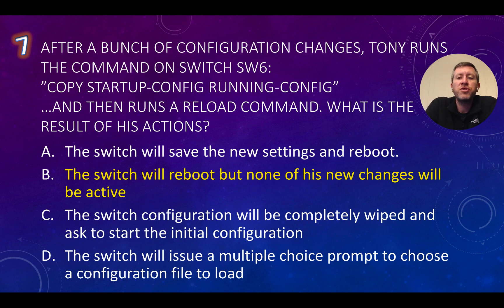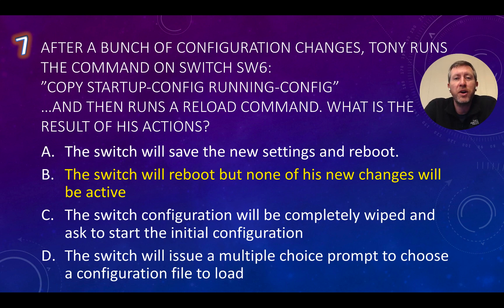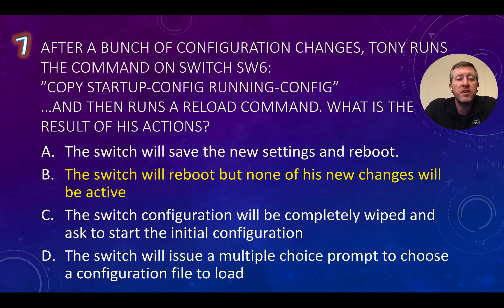Question number seven: after a bunch of configuration changes, Tony runs the command 'copy startup-config running-config' on switch SW6, then runs a reload command. What's the result? When you copy startup-config to running-config, you're overriding the running configuration in RAM — so any changes just made have been lost, since he did not do a 'copy running-config startup-config' first. The correct command to save changes is 'copy running-config startup-config', or abbreviated as 'copy run start'. This is going to be B: the switch will reboot but none of his new changes will be active. The switch reboots because the reload command was issued.